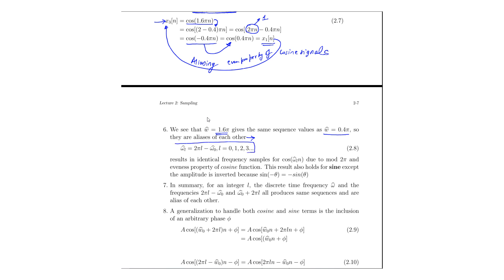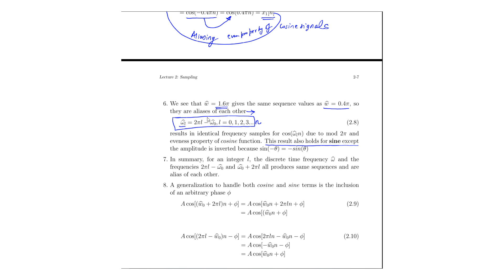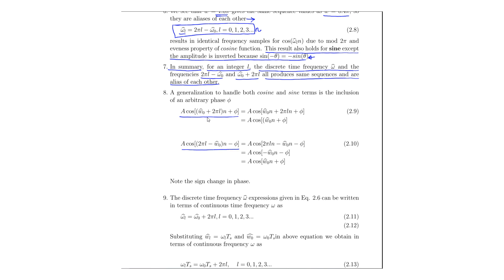Generalizing this again, we obtain the expression ω̂_l = 2πl − ω̂_0, where l runs from 0, 1, 2, 3 up to n. All cosines having ω̂_l as their frequencies will be aliased to ω̂_0. These results also hold for sine, except that the amplitude is inverted because of the odd property of the sine signal. In summary, for any integer l, the discrete time frequency ω̂_0 and the corresponding frequencies 2πl − ω̂_0 and ω̂_0 + 2πl all produce the same sequences and are aliases of each other. This is a more generalized variation of what we have discussed, as we are also including the phase φ.